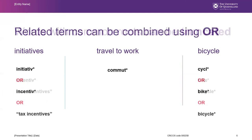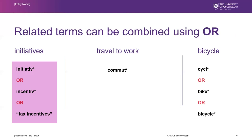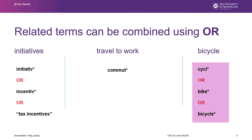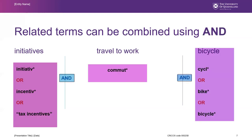Now we have the key concepts. Let's use the related terms and combine them with the Boolean operator OR. For initiatives, using truncation we add an asterisk, and we want articles which have the term initiative, or incentives, or tax incentives. Similarly for bicycle, we want articles with cycle, bike, or bicycle. We combine these different related concepts using the Boolean operator AND to form a search string. Let's go to the Scopus database and do the search.